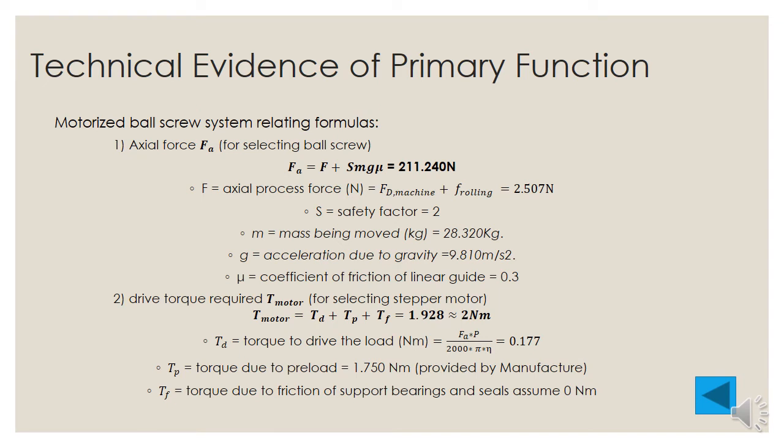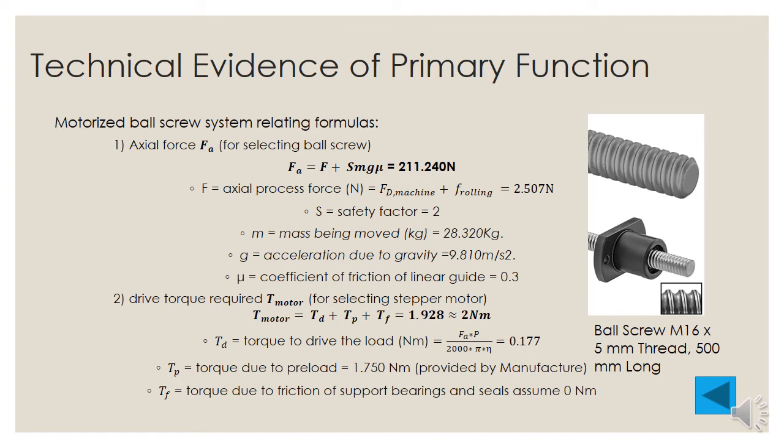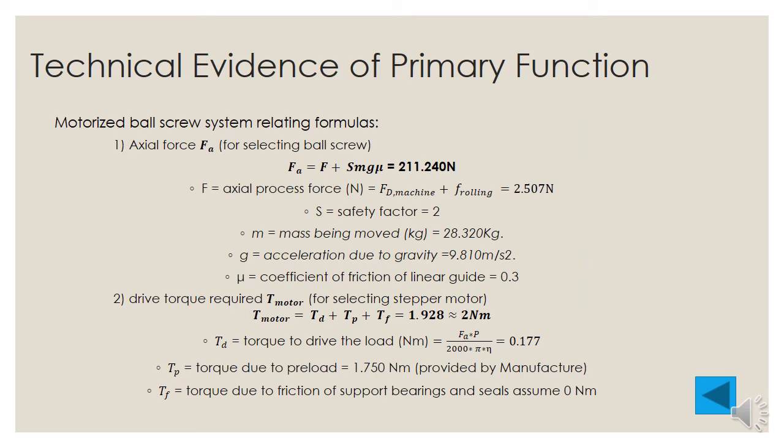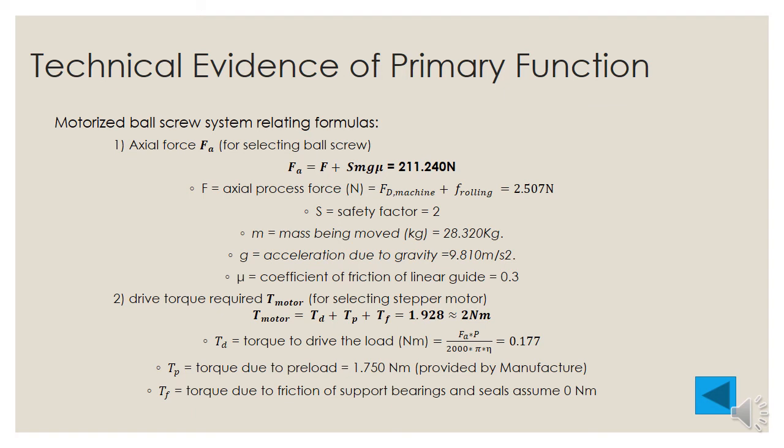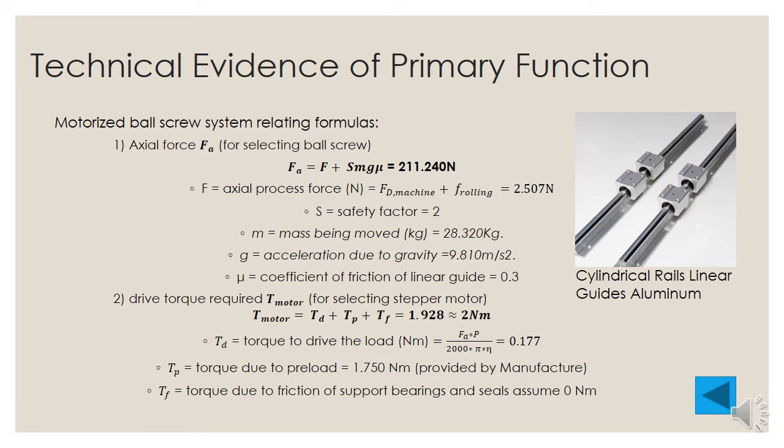First, the maximal axial force on ball screw is estimated by axial process force, mass being moved, and coefficient of friction. With a safety factor of 2, FA is equal to 211.24 N. Thus, a M60 x 5 mm carbon steel ball screw is selected. Here is a picture of it. Based on the axial load, the drive torque of the motor can be estimated by adding TD, TP, and TF together. And the drive torque is around 2 Nm. Thus, a stepper motor with a 2 Nm rated torque is selected. Finally, for the guide rail, a cylindrical aluminum rail is chosen to minimize the friction. Here is a picture of it.